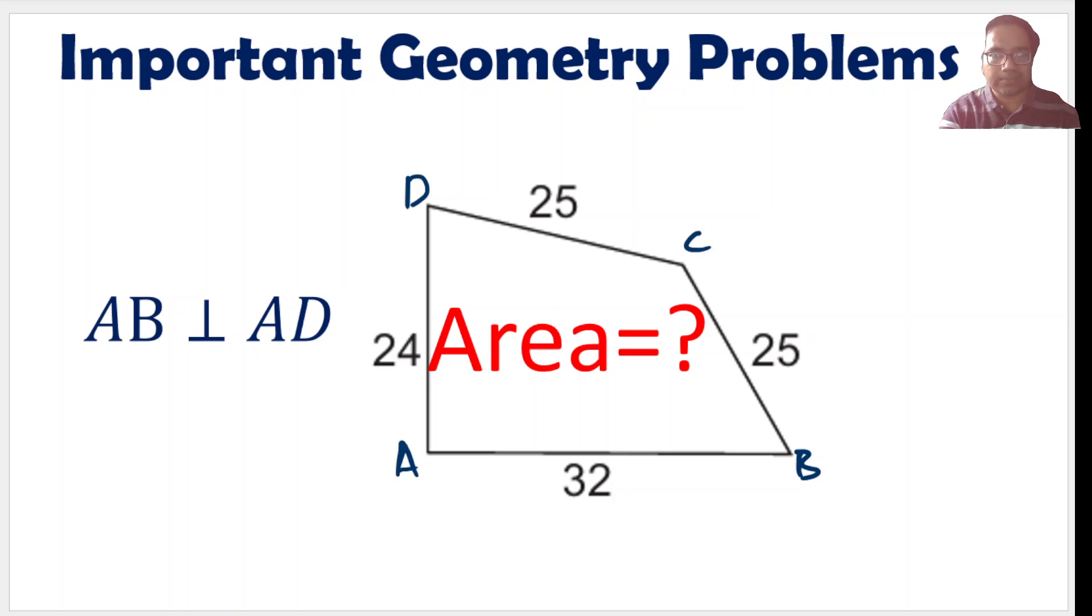Hi friends, in this problem we are given a quadrilateral ABCD. Here AB is perpendicular to AD, and we have to calculate the overall area. Two of its sides are equal, 25 and 25. This is a simple problem. Just by using Pythagorean theorem we should be able to solve this. Let us see how.